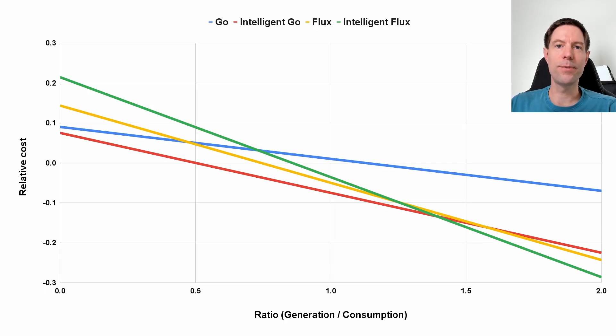So just as a quick recap, this is what my rule of thumb looked like at the beginning of the summer and it suggested to me that as long as my generation was more than 1.4 times the level of my typical consumption for a month, then I should be on the Intelligent Flux tariff. That's because this relative cost line for Intelligent Flux is the lowest of all of the four tariffs that I show in this chart for any value, any ratio over 1.4.